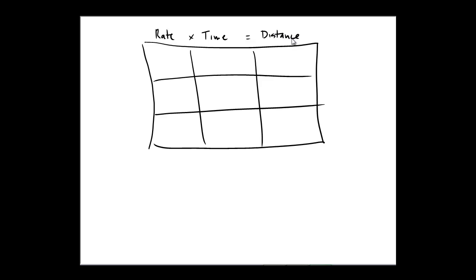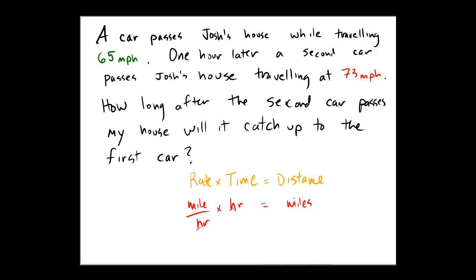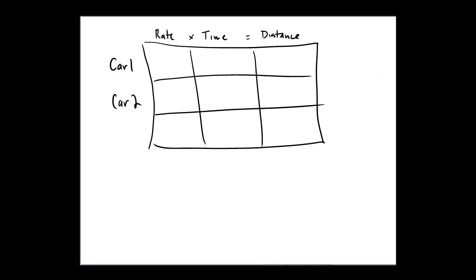In the problem there were two different cars. There was the first car that came by my house, and then there was a second car that drove by my house. What were the rates of the cars? The first car passes at 65 miles per hour, and the second car passes at 73 miles per hour. So Car 1: 65 miles per hour. Car 2: 73 miles per hour.